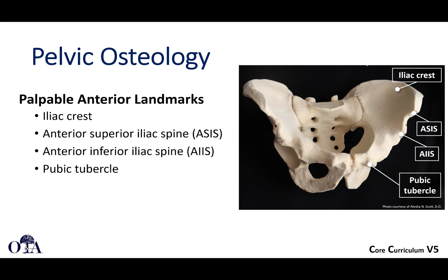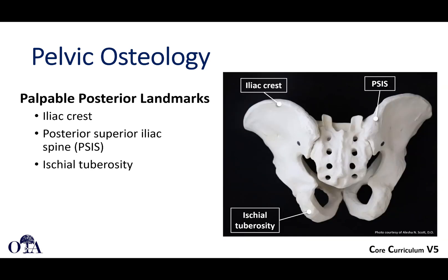Palpable anterior landmarks on a patient with reasonable body habitus include the iliac crest, the anterior superior iliac spine, the anterior inferior iliac spine — which is a little bit harder to palpate — and to some extent the pubic tubercle. Palpable posterior landmarks, which you can examine if the patient is prone, are the posterior iliac crest, the PSIS, and the ischial tuberosity.